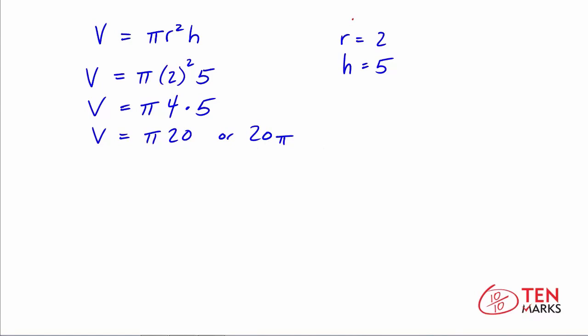Now what happens if the radius is doubled? Let's see. So the radius is 2. What if it were doubled to 4? So now we would have V equals pi times 4 squared times 5. 4 squared is 16. And 16 times 5 is 80. So here we would have pi times 80, or 80 pi.